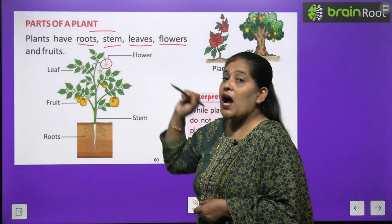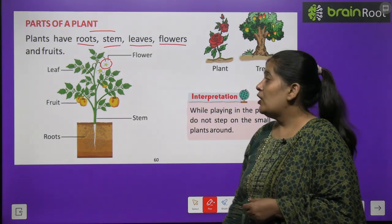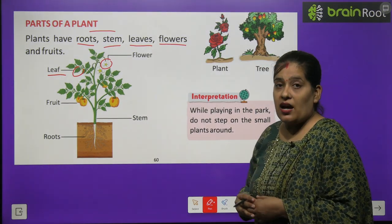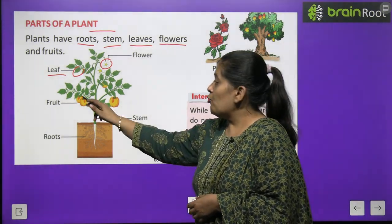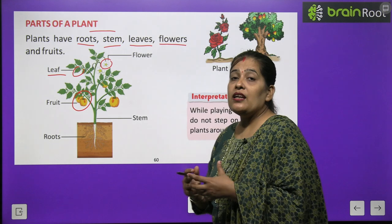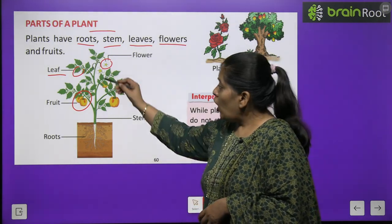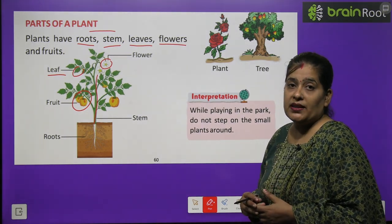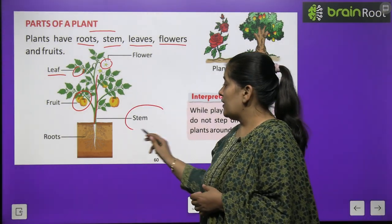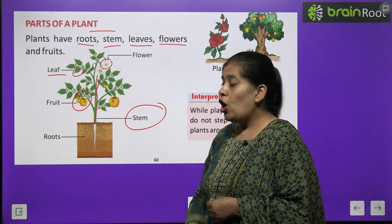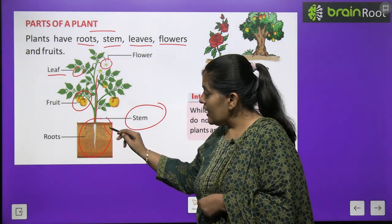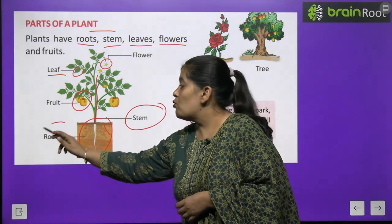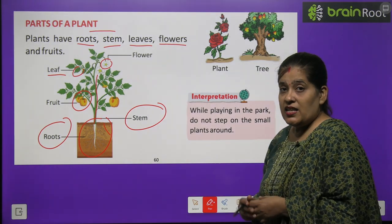सबसे सुन्दर भाग होता है flower यानी फूल। और green color की होती हैं leaves — leaves पौधों के लिए खाना यानी food बनाती हैं। पेड़ों पर फल लगते हैं। पौधे का वो हरा भाग जो पौधे को सीधा खड़ा रखने में मदद करता है उसे हम stem यानी तना कहते हैं। और पौधे का वो भाग जो मिट्टी के अंदर होता है वो होती हैं roots, जिसे हम जड़ें कहते हैं।